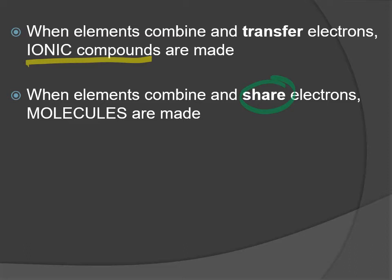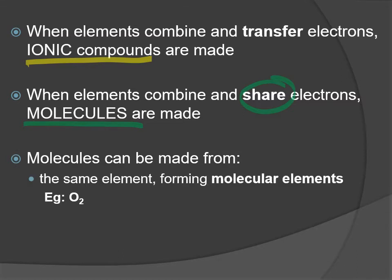A covalent bond involves a shared pair of electrons, and you end up with particles called molecules. Molecules can be made from the same element - if you take two, three, or eight of the same element on the periodic table and they come together sharing electrons, these are called molecular elements. They're still made of only one type of atom even though found in groups: pairs like oxygen gas, or groups of eight like sulfur.